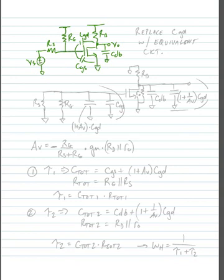So what we're going to do is replace Cgd with its equivalent circuit. If you'll recall, we short our voltage sources.